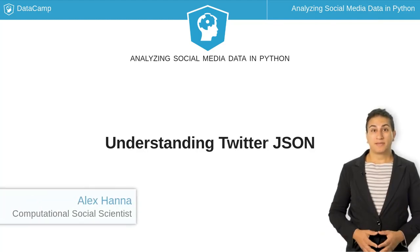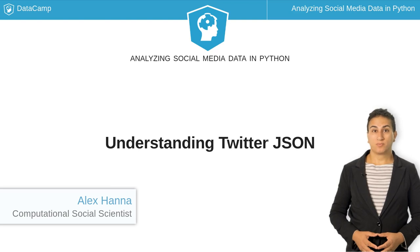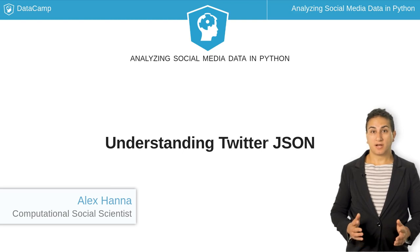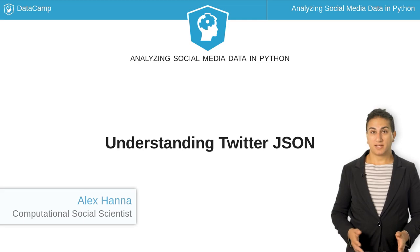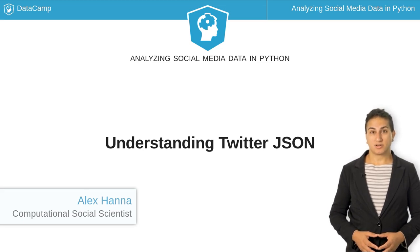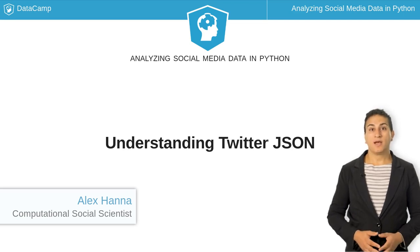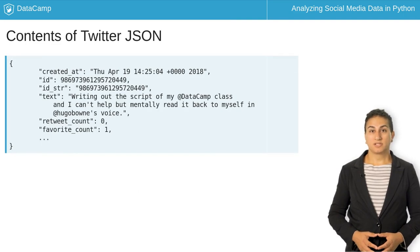Now that you've collected some Twitter data, let's dig into the structure of the data. The examples we are working with in this course return information in JavaScript Object Notation, or JSON. JSON is a special data format which is both human-readable and easily transferred between machines. JSON is structured a lot like Python objects and is composed of a combination of dictionaries and lists.